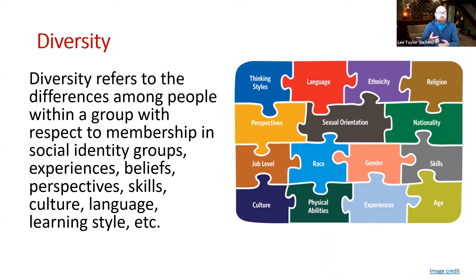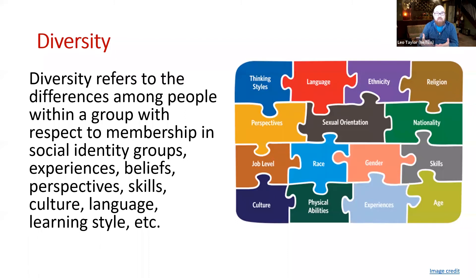Neurodiversity encompasses things like autism and ADHD, dyslexia, dyscalculia, and Tourette syndrome, but it also includes the way brains differ neurochemically in ways that cause things like depression and anxiety. People like myself who have a lifetime of battling depression and anxiety bring something different to the table because of our neurodiversity. So it's all these ways that we categorize each other.